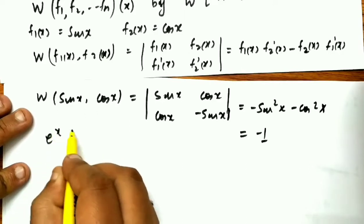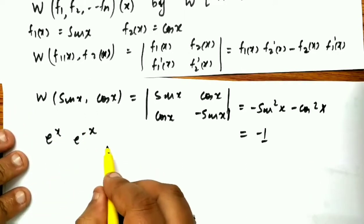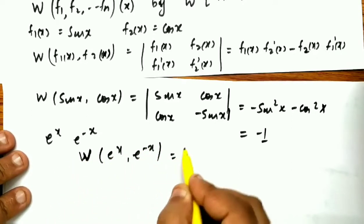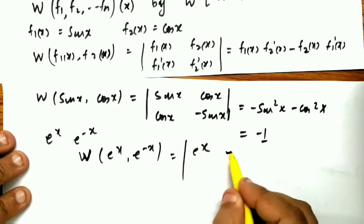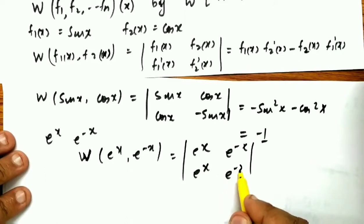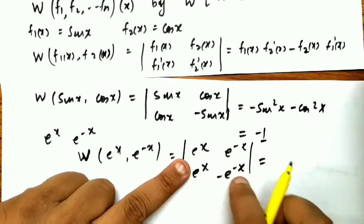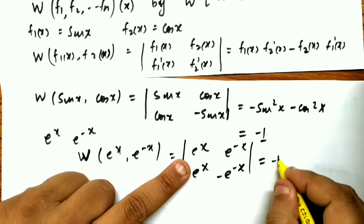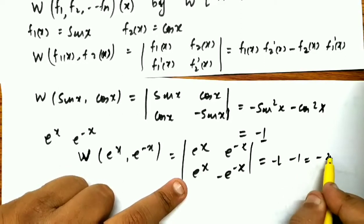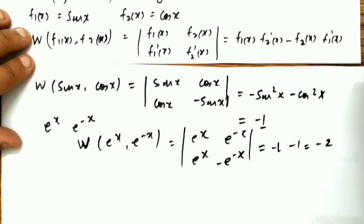For the next example, the two functions are e^x and e^(−x). We calculate W(e^x, e^(−x)) directly. The 2×2 determinant gives e^x·(−e^(−x)) minus e^(−x)·e^x, which simplifies to −1 − 1 = −2. So the Wronskian of e^x and e^(−x) is −2.